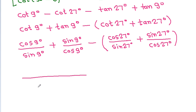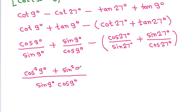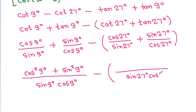Combining each pair over a common denominator, cot 9° + tan 9° gives (cos²9° + sin²9°) / (sin 9° cos 9°), and cot 27° + tan 27° gives (cos²27° + sin²27°) / (sin 27° cos 27°).